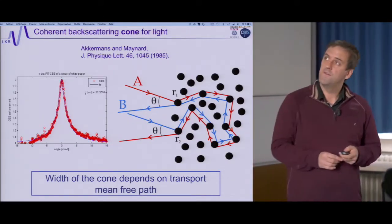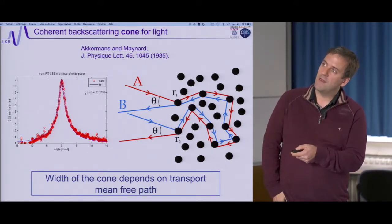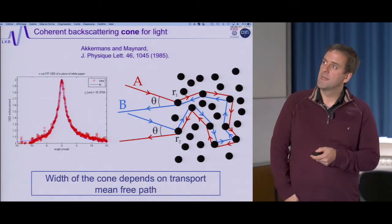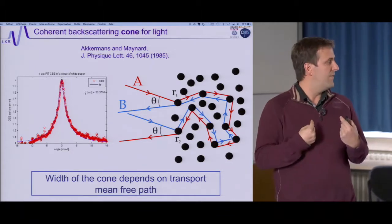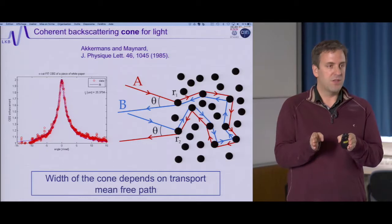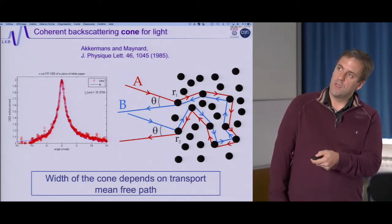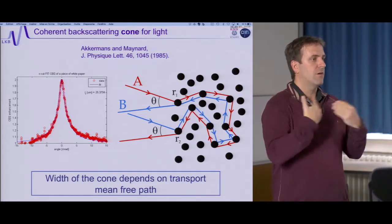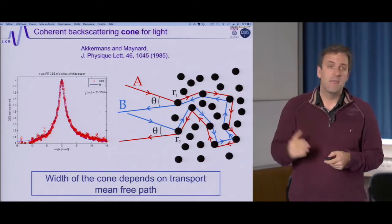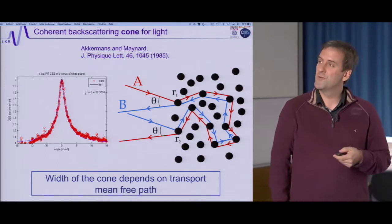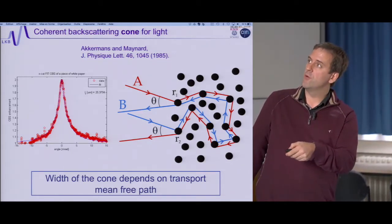In light you have exactly the same physics, but instead of a magnetic field, you play on the angle of incidence and collection. You observe twice as much reflectivity in exactly the same direction as incidence. If you tune slightly the angle of collection, you lose this factor of two. So averaging over all angles, you see isotropic reflection, but in the direction of incidence there is a factor-of-two narrow angular peak — the coherent backscattering cone. The width of this cone depends on how deep you go inside the medium, i.e., on the mean free path.